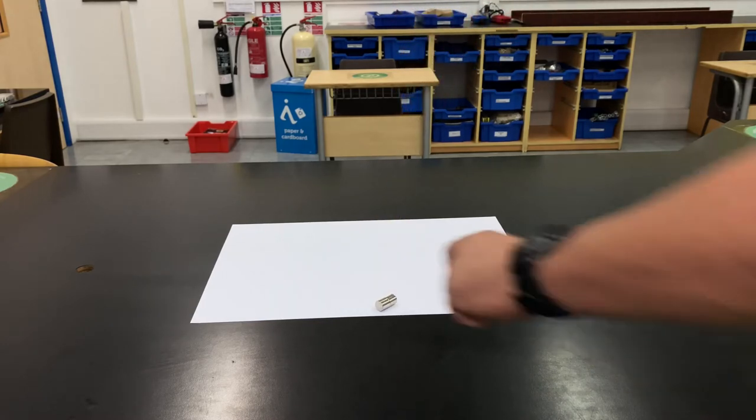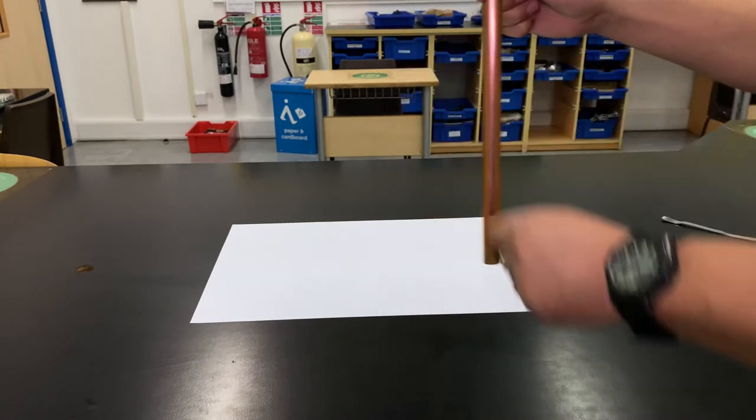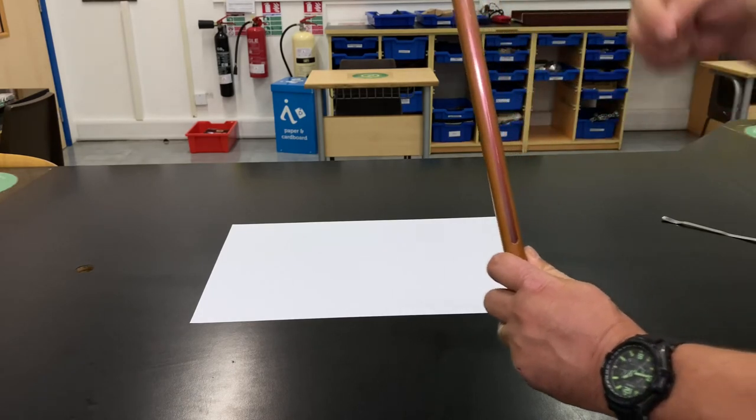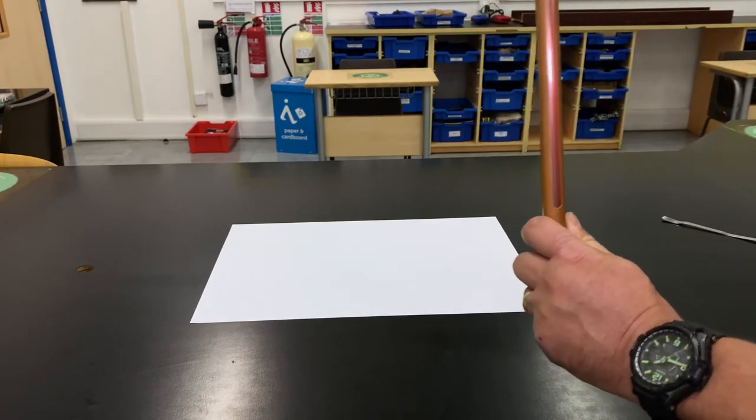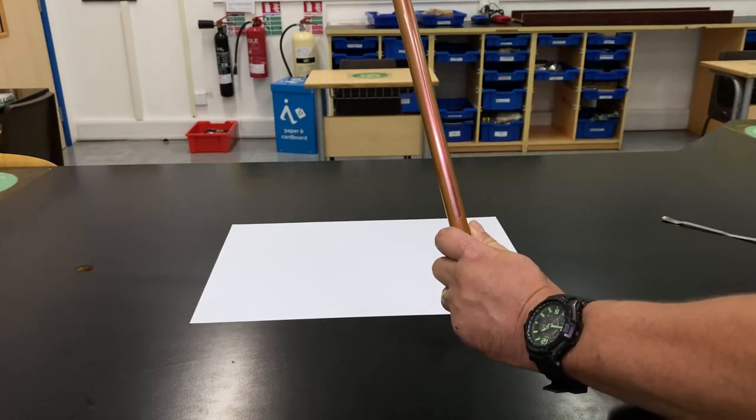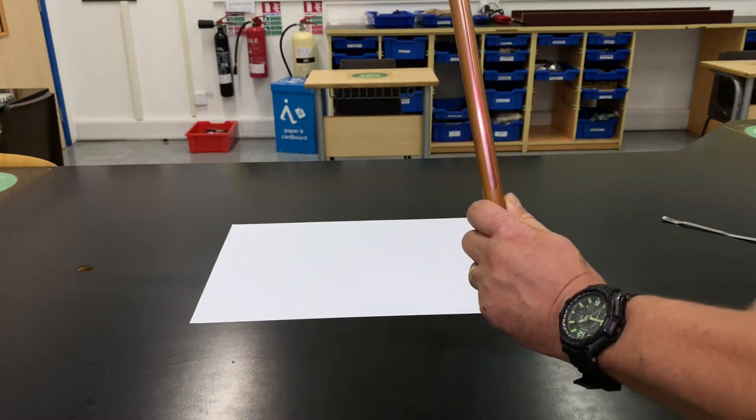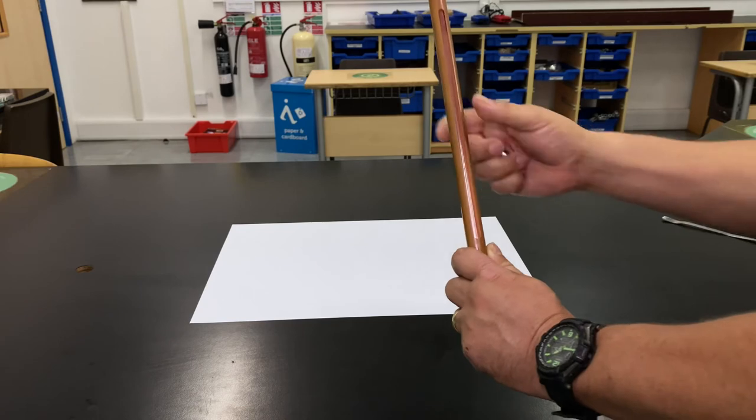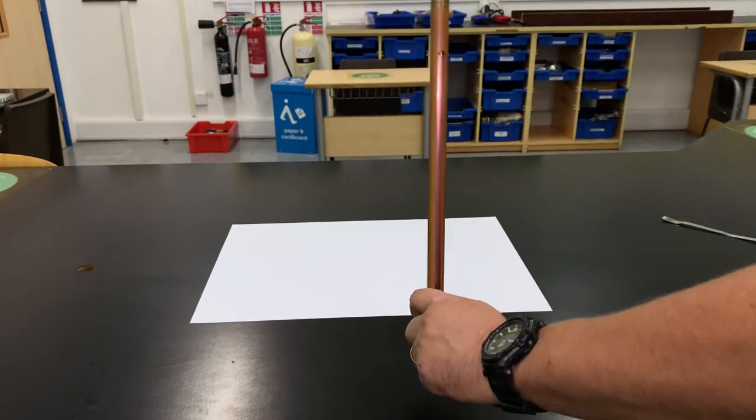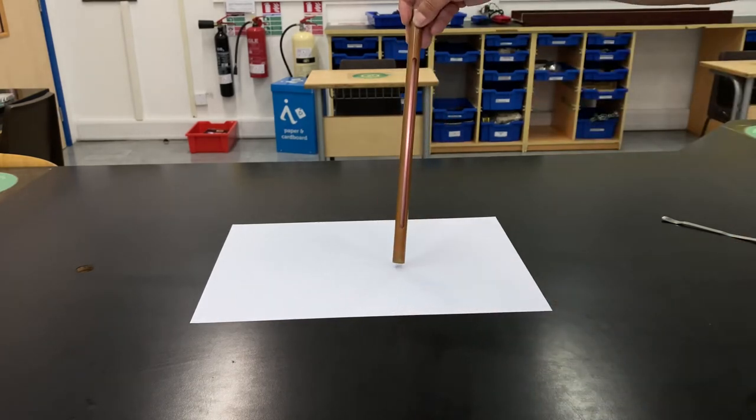The reason is because as the magnets are traveling down through the copper tubing, the change in flux linkage within the section of copper that is passing through changes, and that induces circular eddy currents going round and round the copper, which in turn induce some magnetic field which opposes the change that's causing it. So this is an example of magnetic braking.